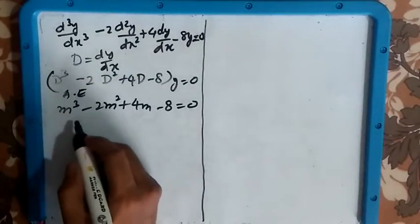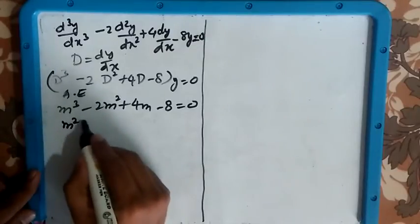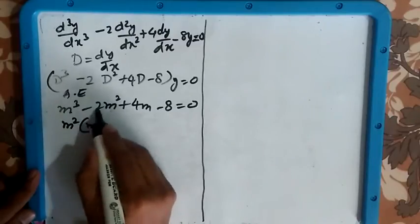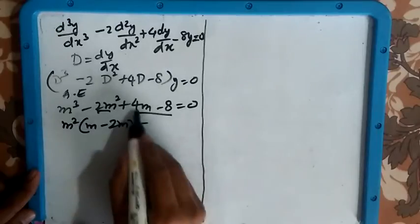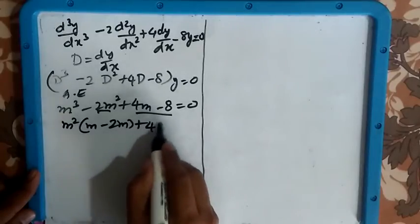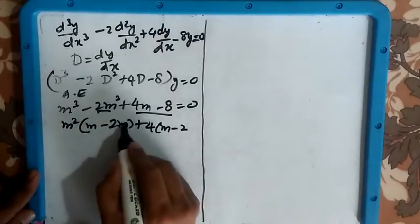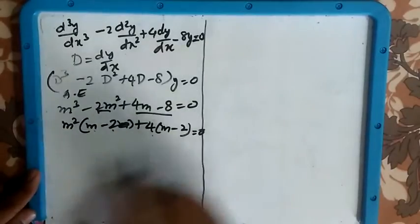Just try out, look out for a possible factorization. We have here m² common, so m²(m - 2). In these two terms we can see 4 is common, 4(m - 2). So m²(m - 2) + 4(m - 2) = 0.